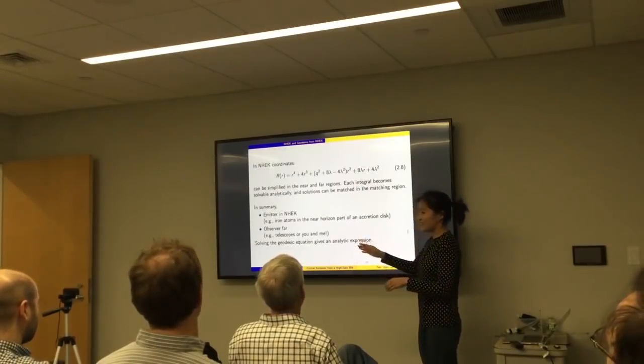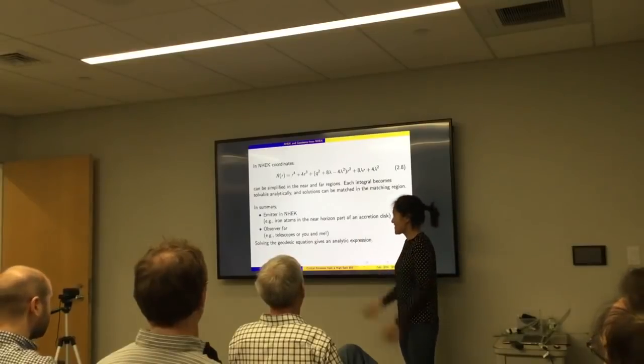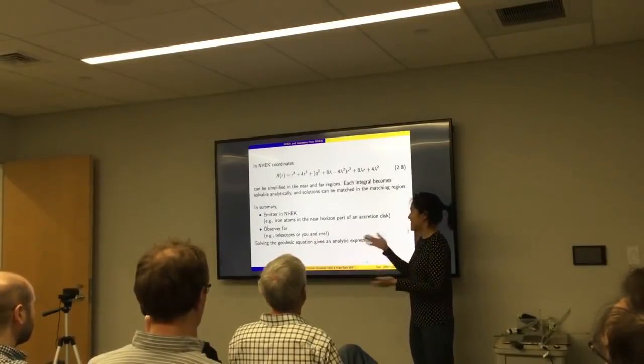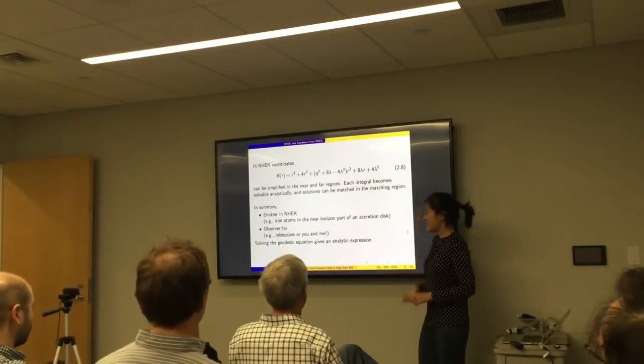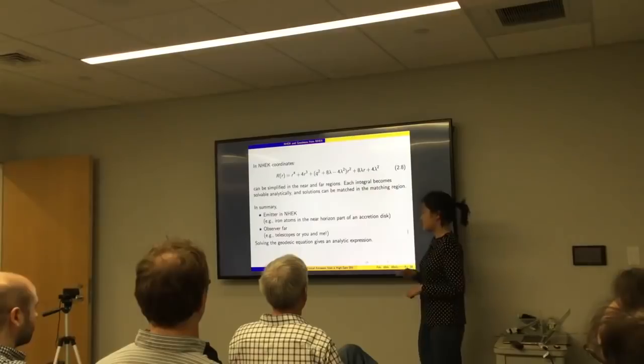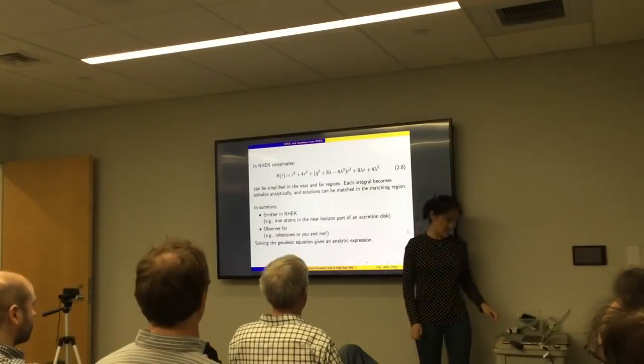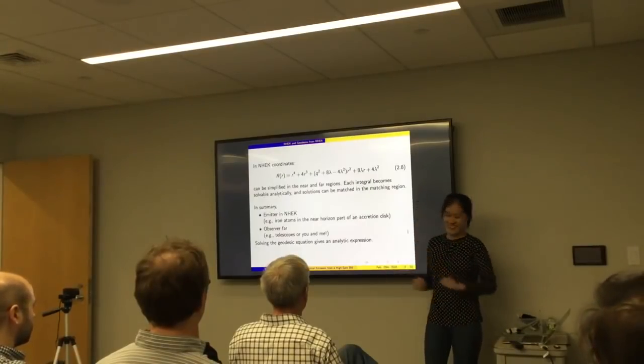But the good news is this can actually be solved analytically for emissions that originate in the near horizon region of Kerr black hole. And how you do that is to use matched asymptotic expansion, which I'll briefly describe. This is first done by Achilles and Andy. In the near region, you have a simpler integral to do, which you can do analytically. In the far region, you also have a simpler integral. And you can match the solution to both integrations in the matching region. So this method only works to leading order, but we do have a leading order analytic solution to the Kerr geodesic. And in summary, if you have an emitting neck, solving the geodesic equation will give you an analytic expression. And this will be useful in the next part of my talk.